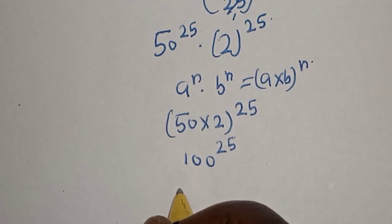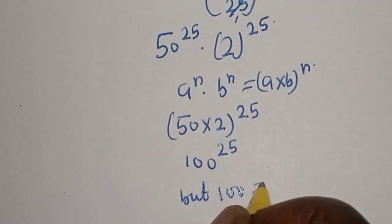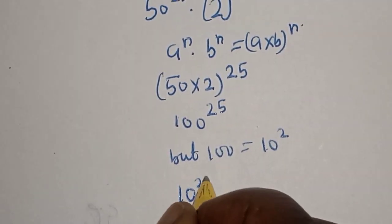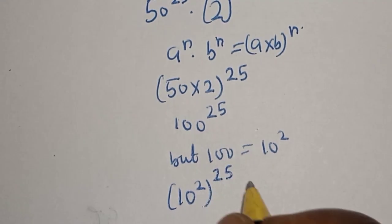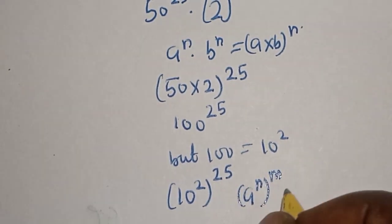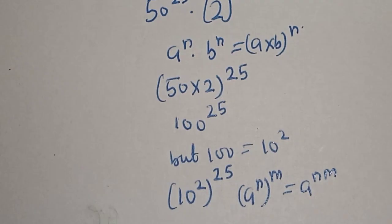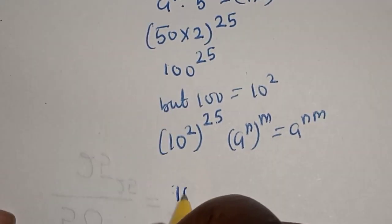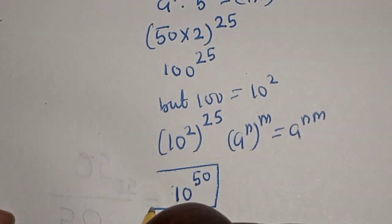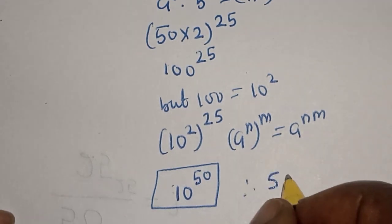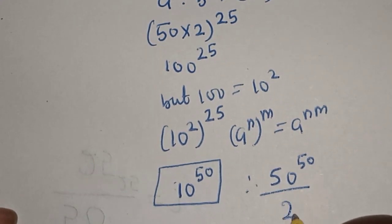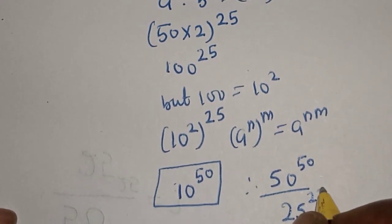Now, 100 is equal to 10 squared, so we have 10 squared raised to power 25. Take note of the rule: a raised to power n raised to power m equals a raised to power n times m. So this is 10 raised to power 25 times 2, which equals 10 raised to power 50. That is our final answer.